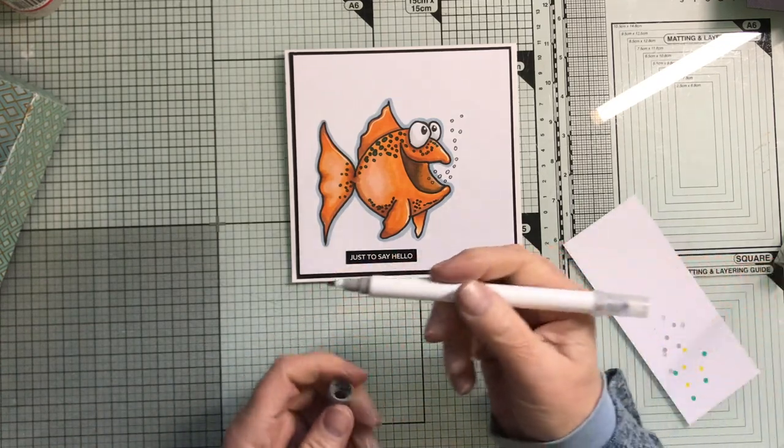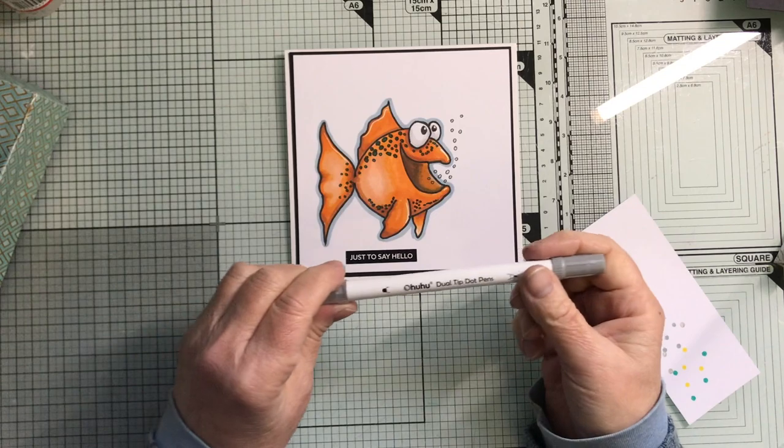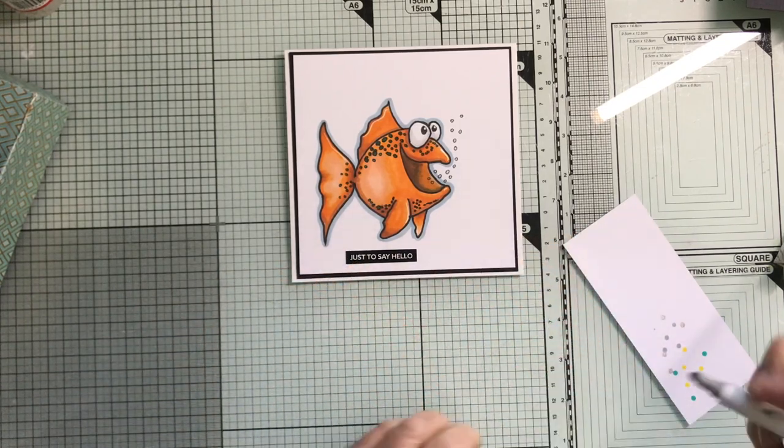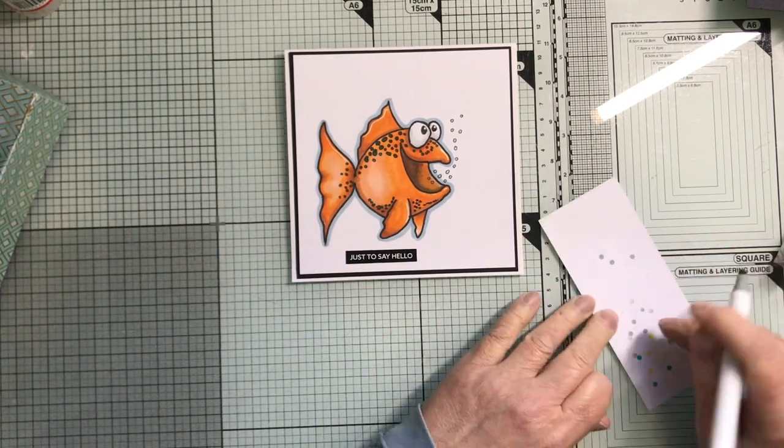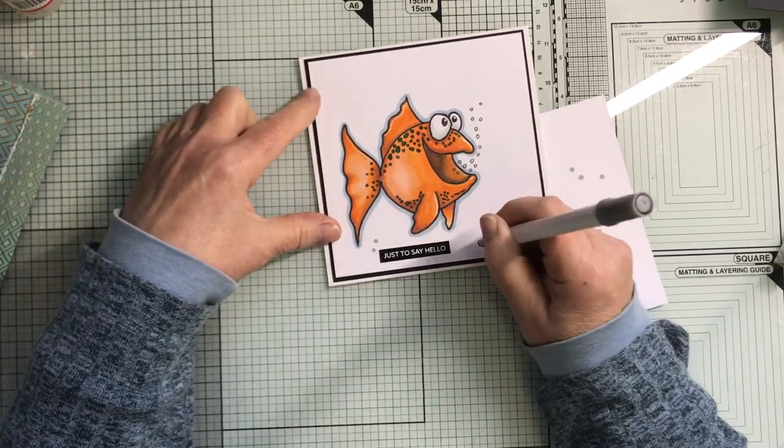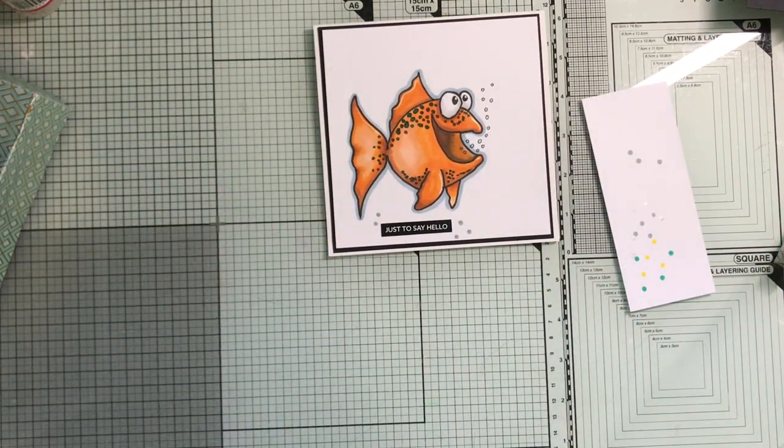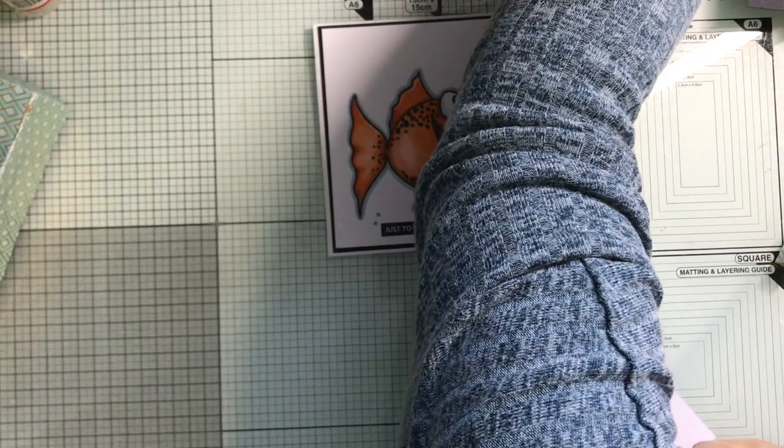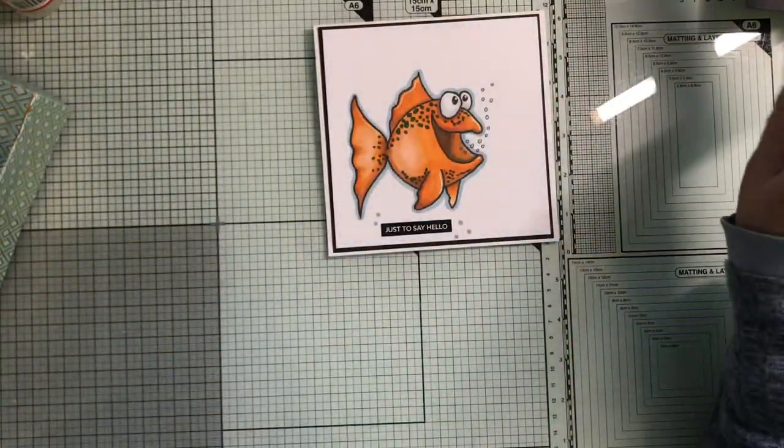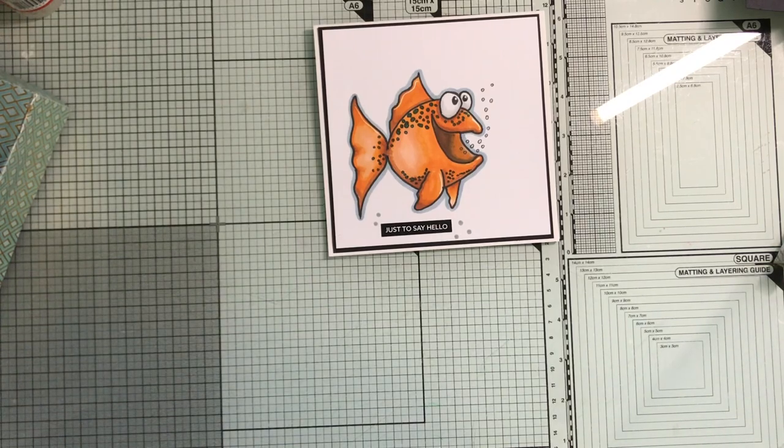I might put a couple of dots on. I've got this Nuvo dual tip dot pen just in that color which is the same as his outline, so I might just do a couple of threes, five, a couple of threes, five. So that's today's card.